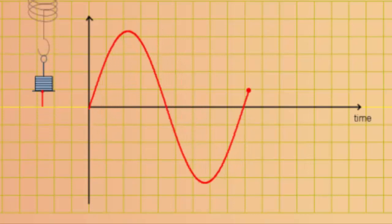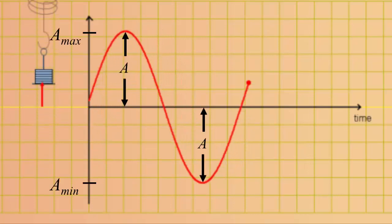We call this maximum displacement the amplitude. The amplitude is a measure of distance, so it has a unit of length, the SI unit of which is a meter.